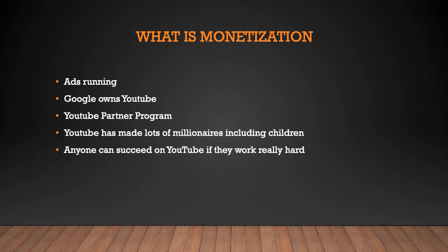You need to be part of the YouTube Partner Program and agree to the YouTube partner terms. To join, you need 4,000 watch hours in the last 12 months and 1,000 subscribers. Once you meet those requirements, Google will verify your address by sending a PIN to your mailbox. You type in the code, verify your address, and then you'll be able to monetize your videos and put ads on them.